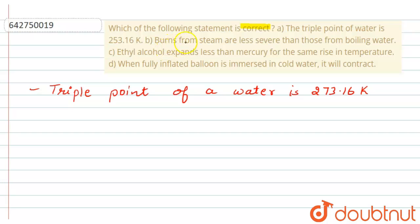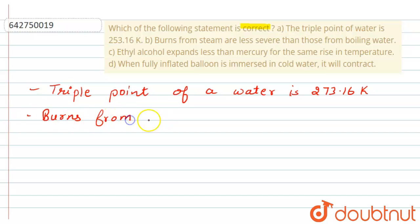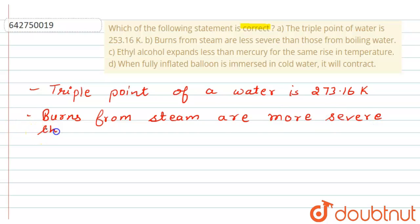The next statement says that burns from steam are less severe than those from boiling water. This is also not correct because burns from steam are more severe. We can write here: burns from steam are more serious or more severe than those from boiling water.